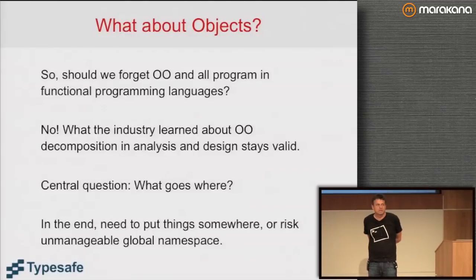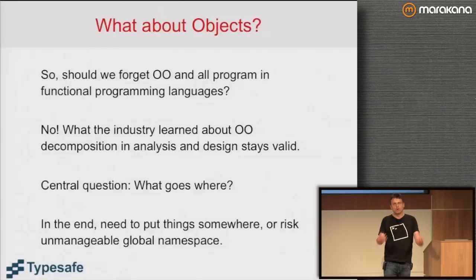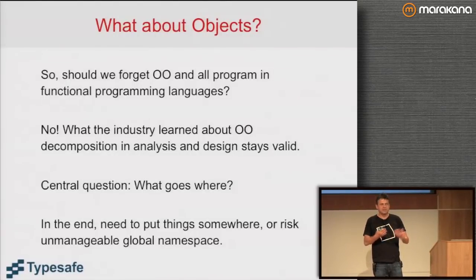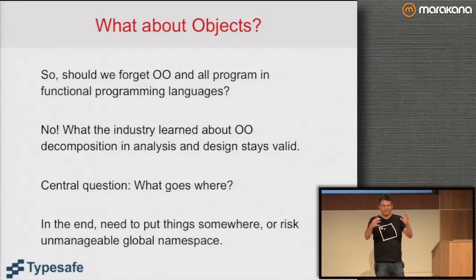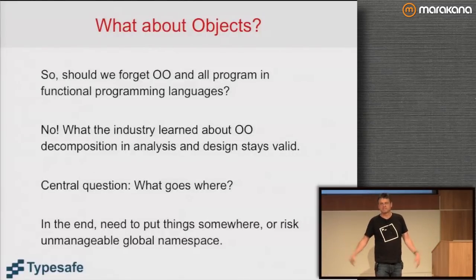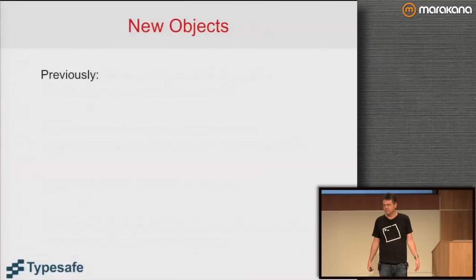Once we're there, the question is: what about objects? Should we forget OOP and program in pure functional languages like Haskell? Some people would recommend that — I'm not one of them. What we've learned about object orientation in modeling and decomposing systems stays very valid. A lot of OO techniques really apply to systems architecture. Just turning things from imperative to functional affects that very little. Fundamentally the question is: where do we put things? How do we structure a system? Without thinking about this you end up with a flat global namespace that can't scale.